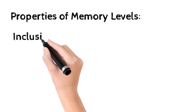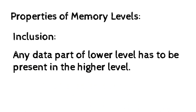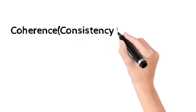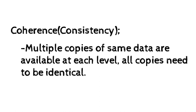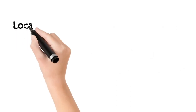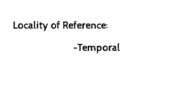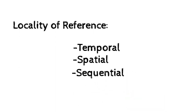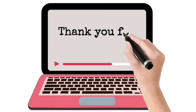Properties of memory levels. The first is inclusion: any data that is part of a lower level must be present in the higher level. Next is coherence and consistency: multiple copies of the same data are available at each level, and all copies need to be identical. The last property is locality of reference, which is based on temporal, spatial, and sequential aspects. Temporal: data will be used in the near future. Spatial: adjacent data is likely to be used often, with respect to location. Sequential: refers to the execution of instructions.